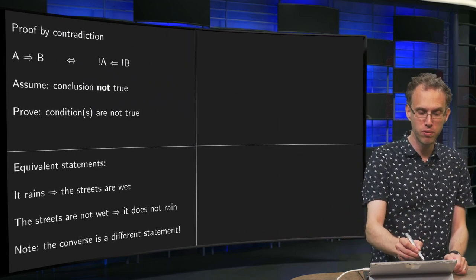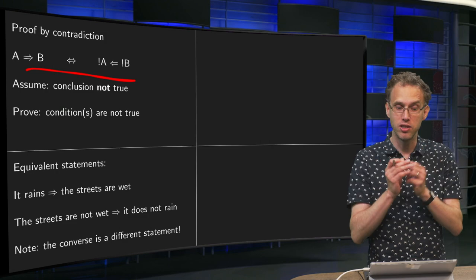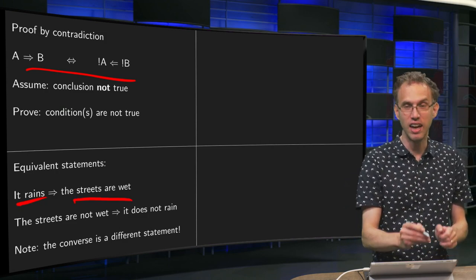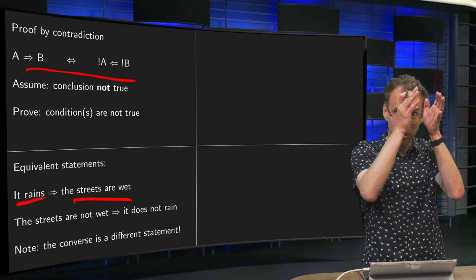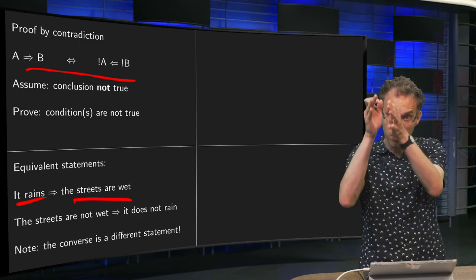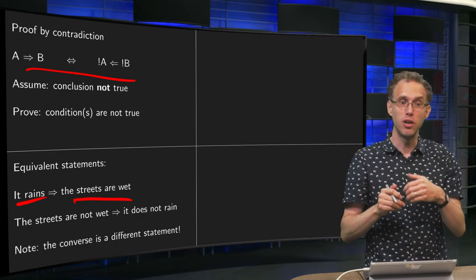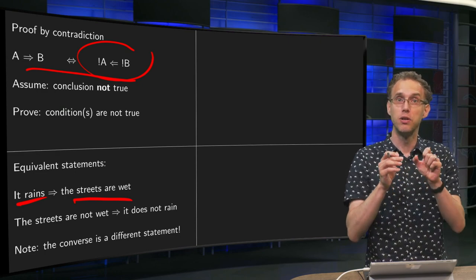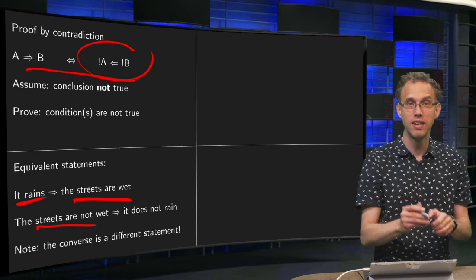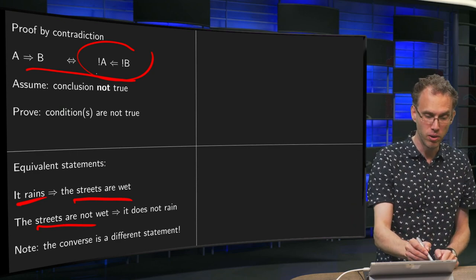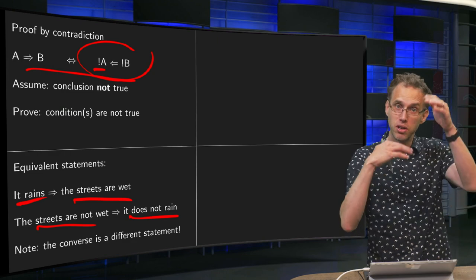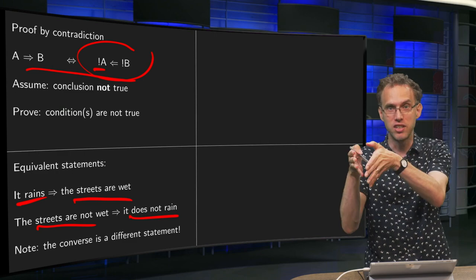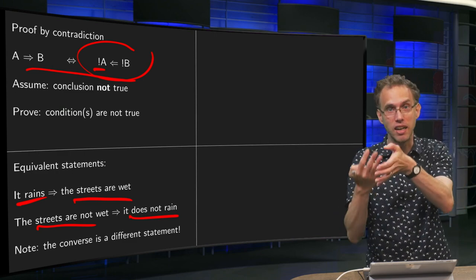Let's take a look first at why this logical statement holds, why this is true. For example, we have the statement: if it rains then the streets are wet. So condition A: it rains; conclusion B: the streets are wet. NOT B — the streets are not wet — implies NOT A: it does not rain. So those are equivalent statements, and I think they are probably true by the way. If it rains then the streets are wet, and if the streets are not wet then it doesn't rain.